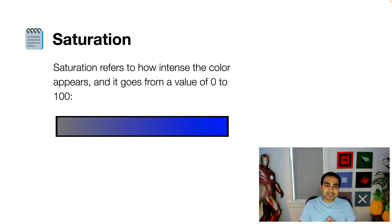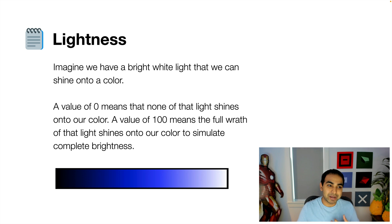The next value is saturation. And what saturation refers to is how intense the color happens to be. And it goes from a value of zero, which is like a muddled gray type of color, to 100, where whatever color you chose is appearing at the full intensity it was designed to appear at.